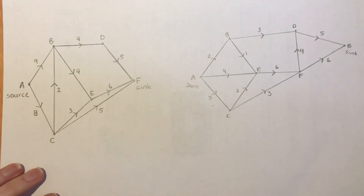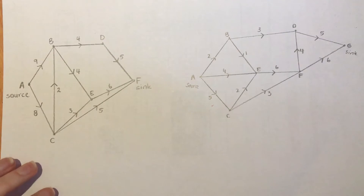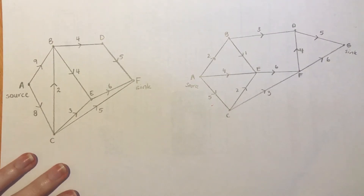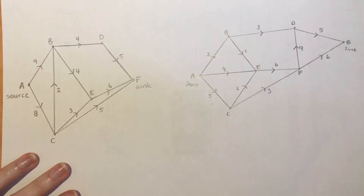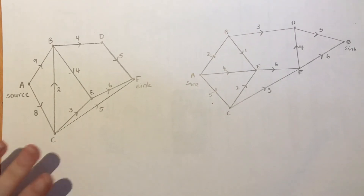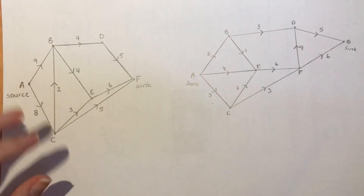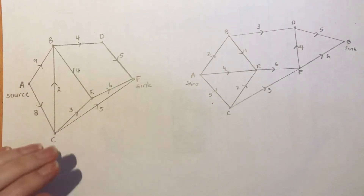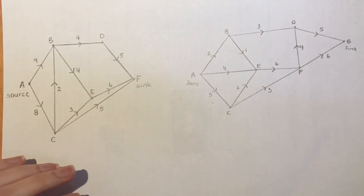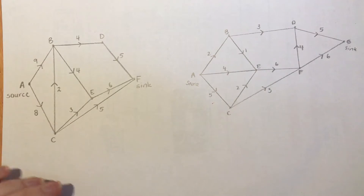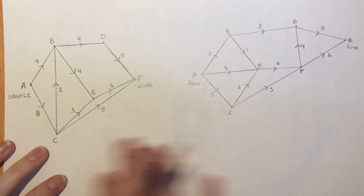This is how you work out the maximum flow and minimum cut in a network. I've tried this for quite a few examples and it seems to work pretty consistently, but for examples where you have edges crossing over it didn't work as effectively. Just keep that in mind. We've got two different examples and I'll do the one on the left first.